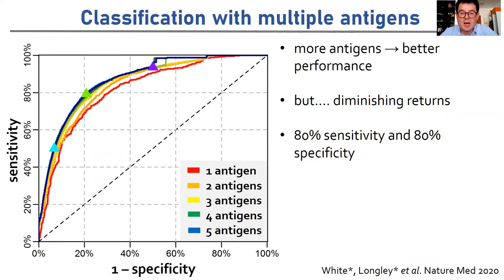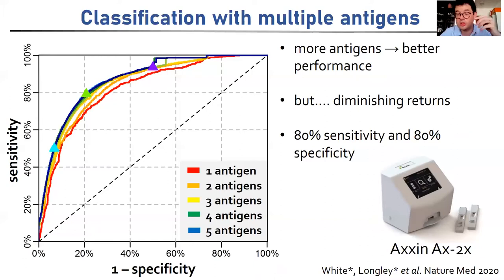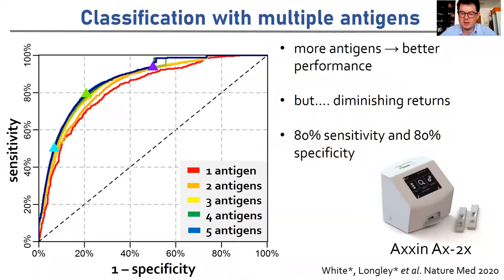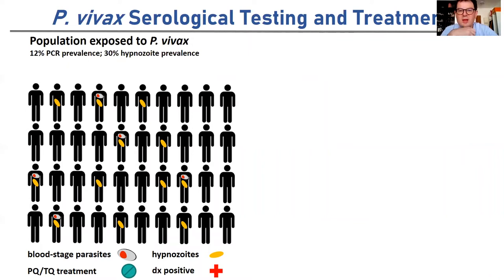So far we've been implementing this in our lab using our Luminex machine. But we're now also working with an Australian biotech company called Axon to develop this as a point-of-care test. The aim is to take this out of the lab and into the field, close to where the cases of vivax malaria actually are. We're also developing an application of how to best use this diagnostic tool, which we call vivax serological testing and treatment.